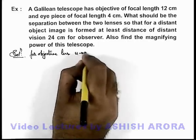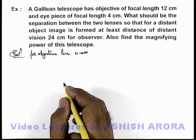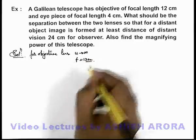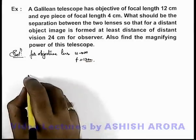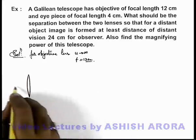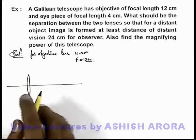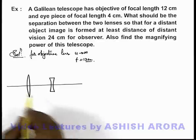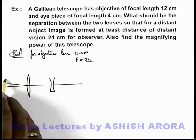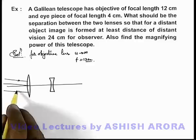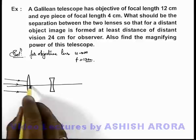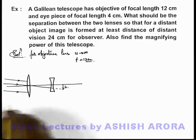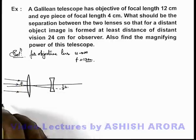For the objective lens, u is tending to infinity as the object is distant, and the focal length of the objective is given as 12 centimeter, which means the first image is produced at 12 centimeter. If we draw the internal structure, we can see that this is the objective lens, and at some distance we place the eyepiece — a concave lens, as it is a Galilean telescope. For an object located far away, the parallel rays incident onto it will produce an image somewhere here, which is of height h. This angle theta we can consider as the angular width of the object.